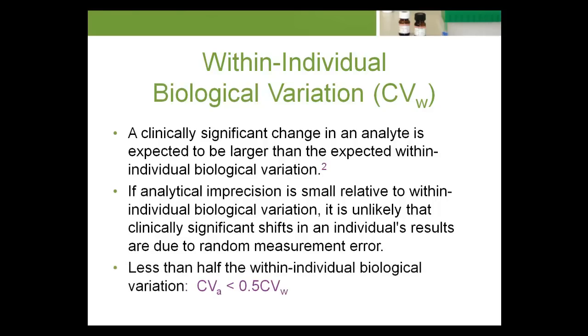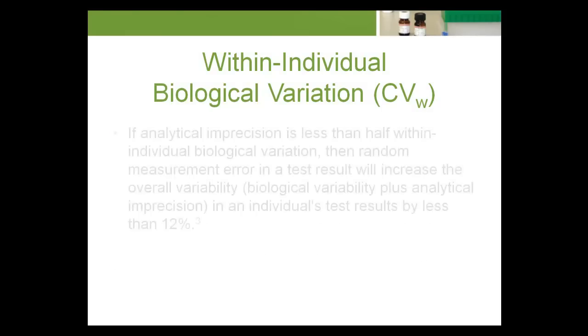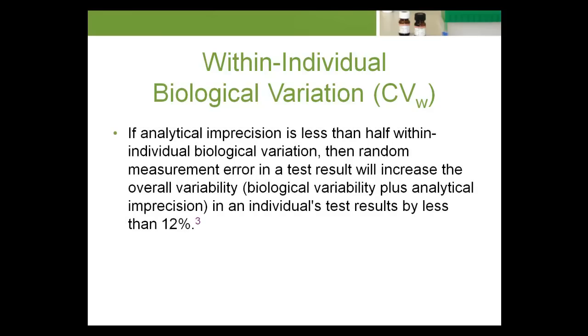A general rule of thumb is that analytical imprecision should be less than half the within-individual biological variation, CVA less than 0.5 CVW. If analytical imprecision is less than half within-individual biological variation, then random measurement error in a test result will increase the overall variability (biological variability plus analytical imprecision) in an individual's test results by less than 12%.